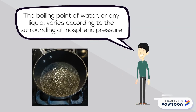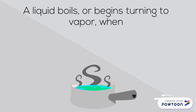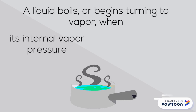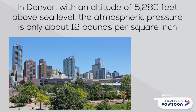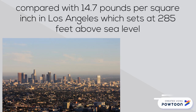The boiling point of water, or any liquid, varies according to the surrounding atmospheric pressure. A liquid boils, or begins turning to vapor, when its internal vapor pressure equals the atmospheric pressure. In Denver, with an altitude of 5,280 feet above sea level, the atmospheric pressure is only about 12 pounds per square inch, compared with 14.7 pounds per square inch in Los Angeles, which sits at 285 feet above sea level.